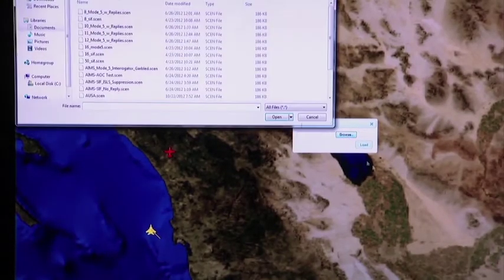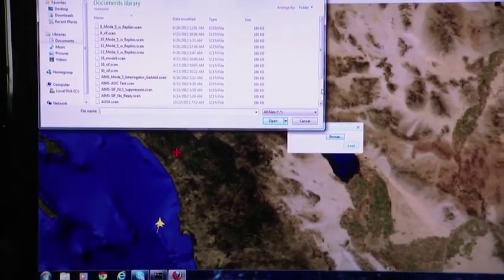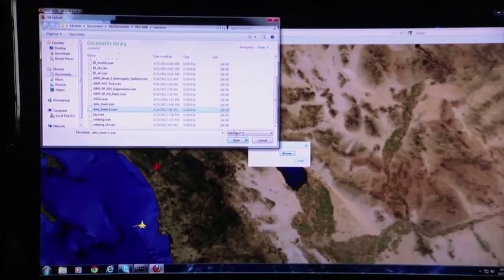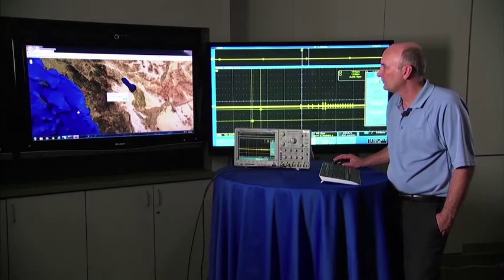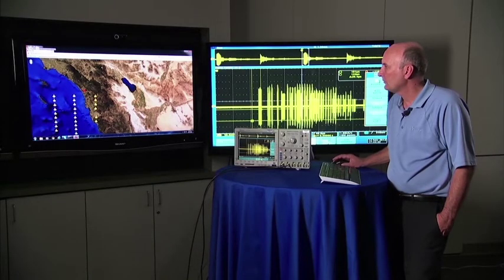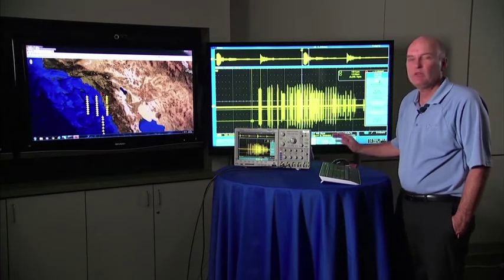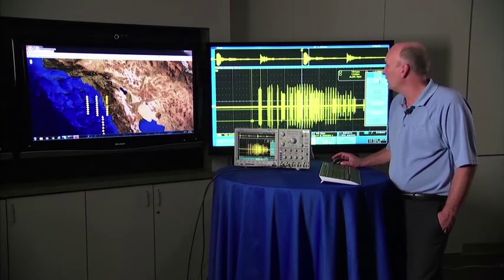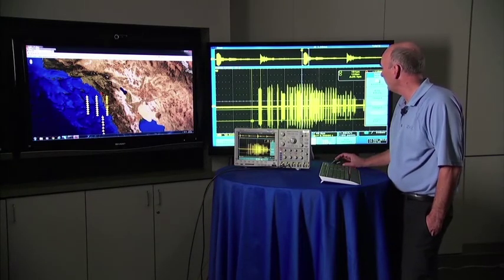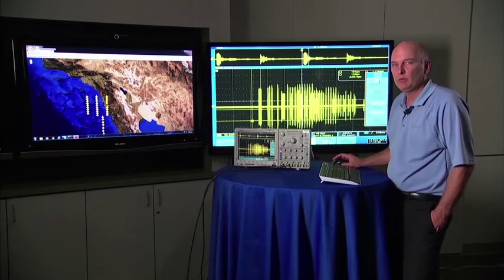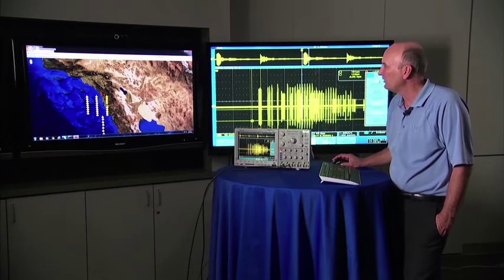This will be our dense scenario. This will show the 50 interrogators, all with different modes. Zoom out just a bit. Here's 50 interrogators, different modes. You can see the density that we have in our scope. It would be very difficult for a transponder to sort out all those interrogations.